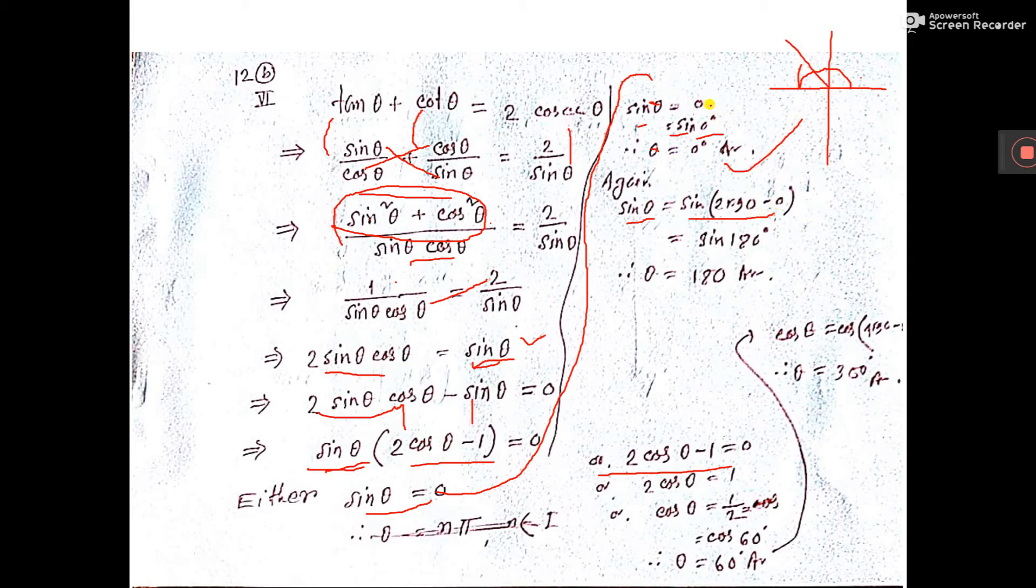Why 0? Because 0 degree, value is 0, sin 0 is 0. Now 2 into 90 means 180. Sin sin cancel, so theta equal to 180.